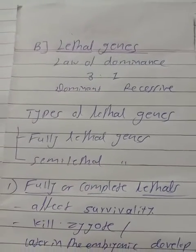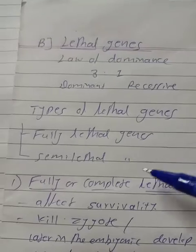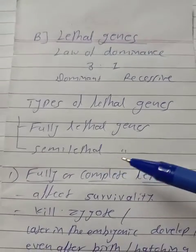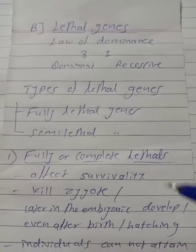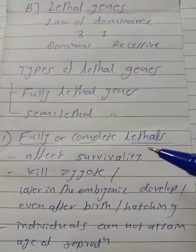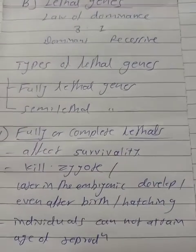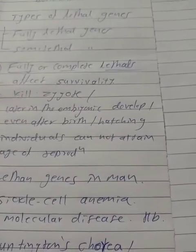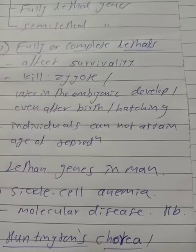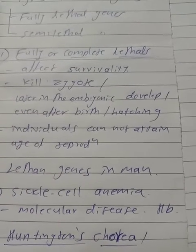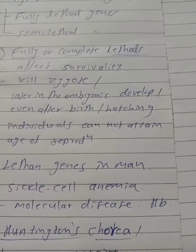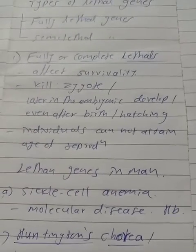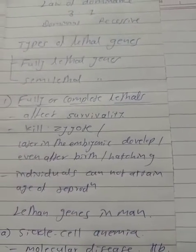Now the types of lethal genes. There are two types: first, the fully lethal gene, and second, the semi-lethal gene. The fully or complete lethals — these genes affect the survivability. They kill the zygote or cause death later in embryonic development, or even after birth or hatching.